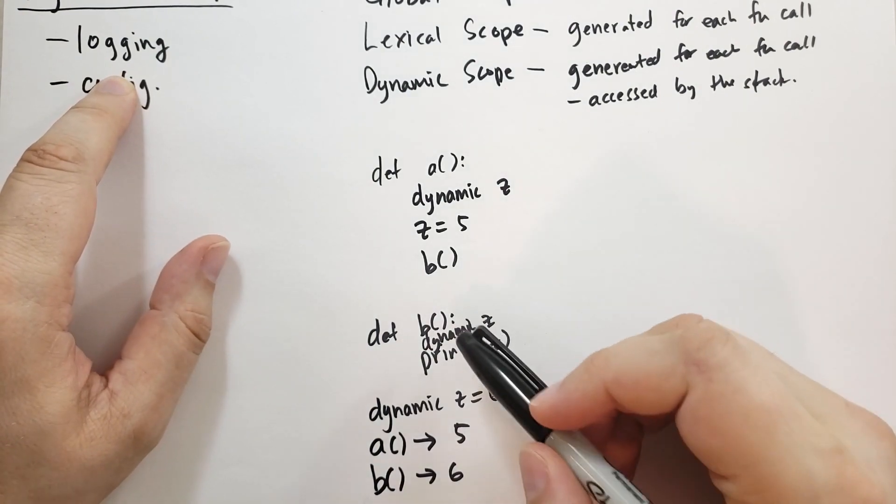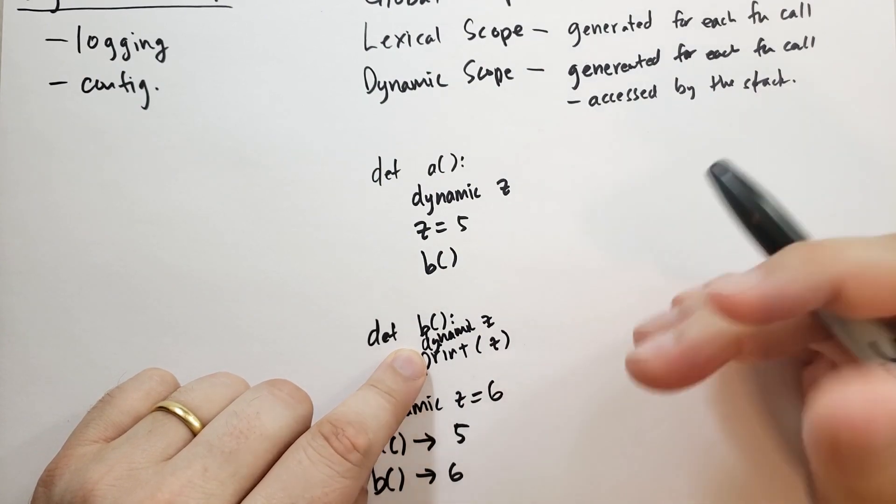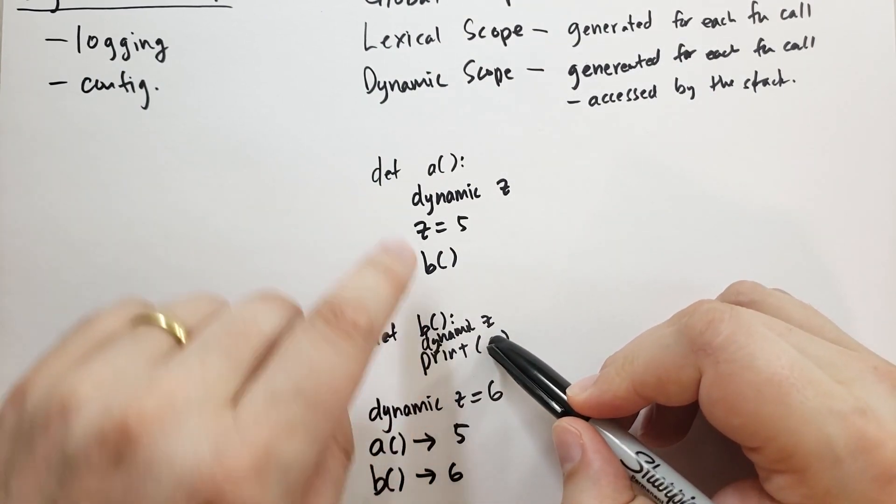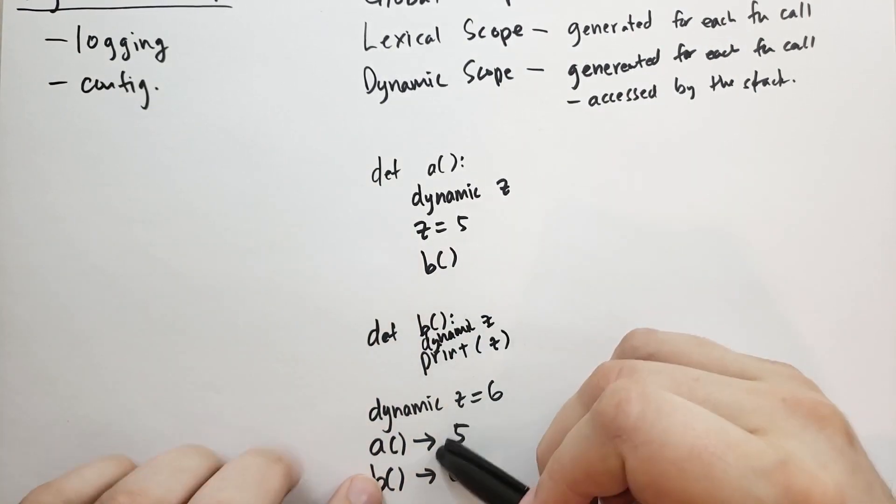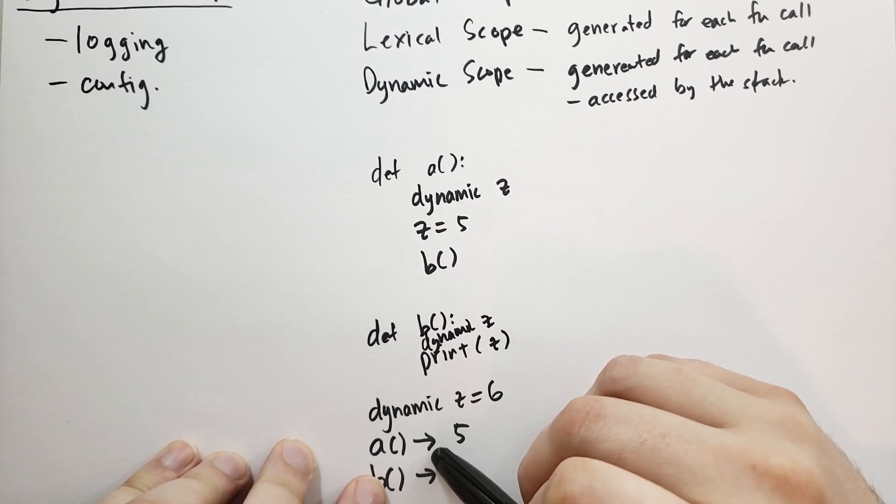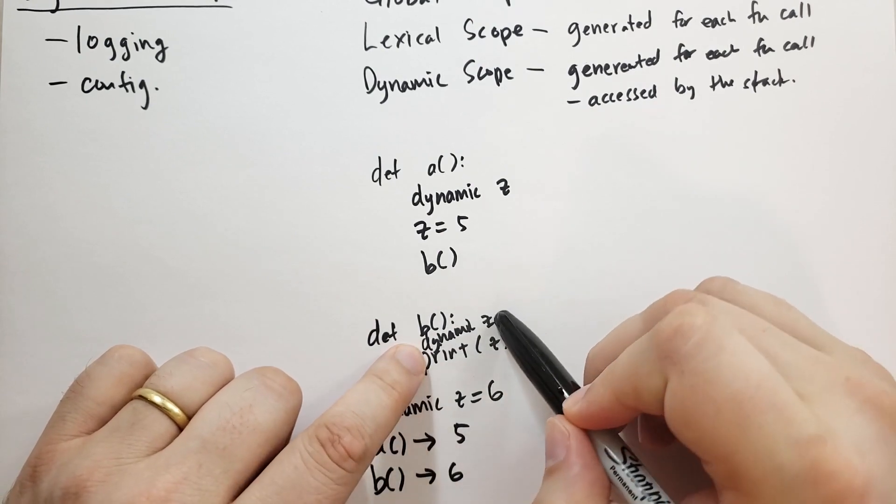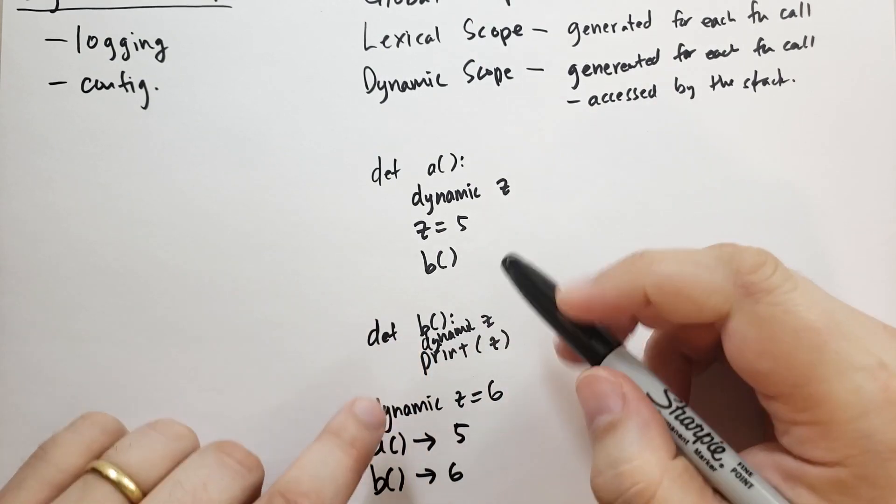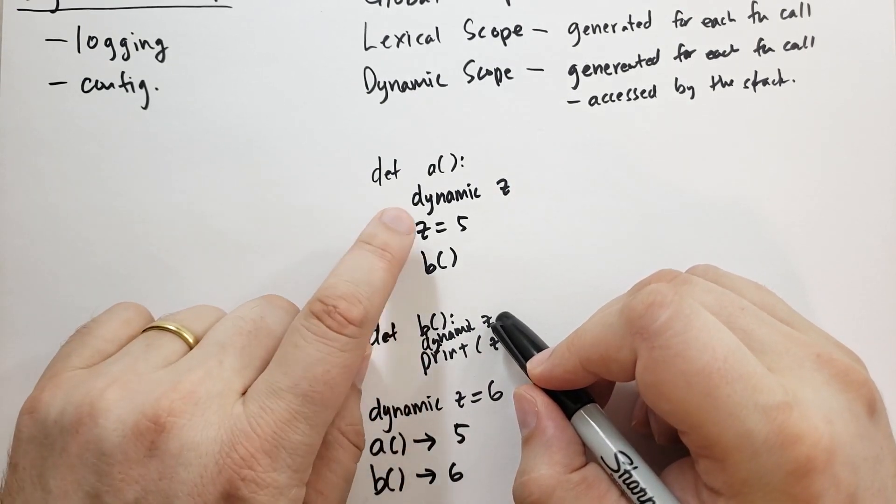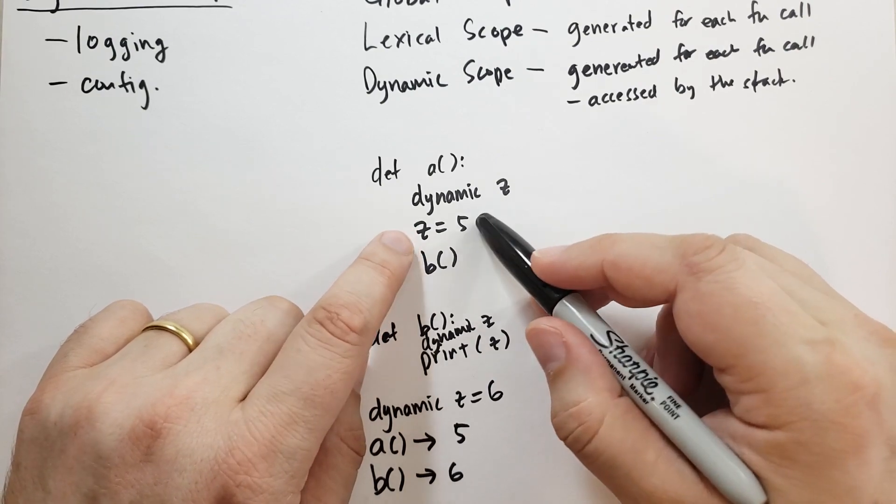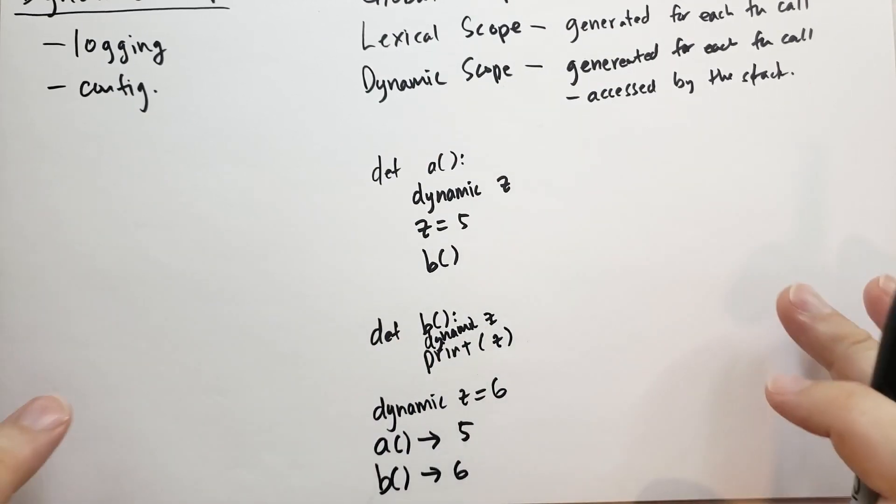For instance, in logging, let's say b is going to log a message, but only if the logging level is set high enough. When we call b through a, we up the logging level so that b will show its messages. But when we're calling b otherwise, we don't want its logging level to be higher, so we keep it low. In the case of configuration, if we're going to call b, it needs to know which server to talk to. If we're calling b directly, then we'll use some global default value. But if we're calling b through a, then we can set the server that we're supposed to talk to. And then b will be talking to the server that a said rather than the server that was set at the global level.